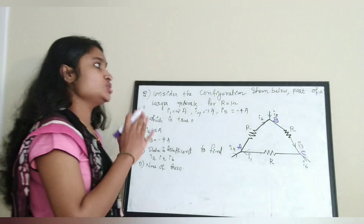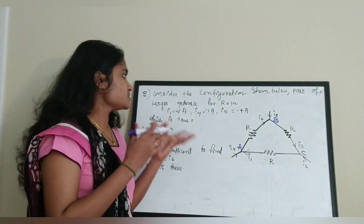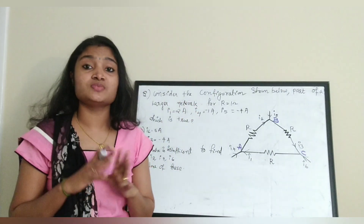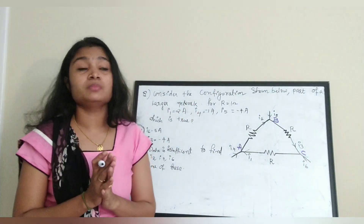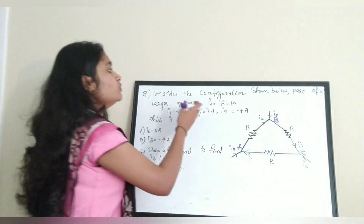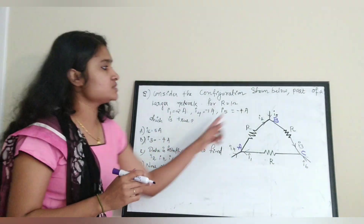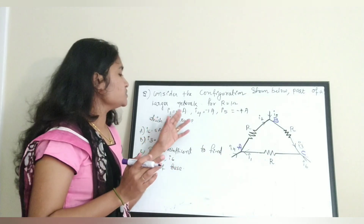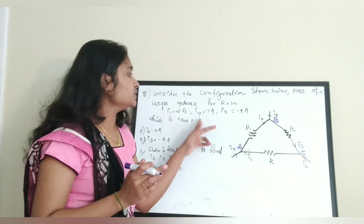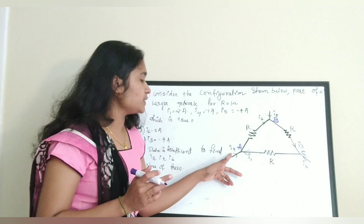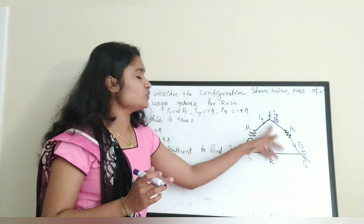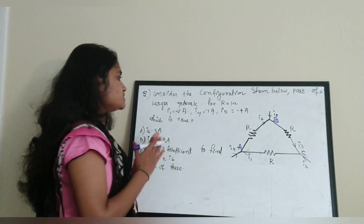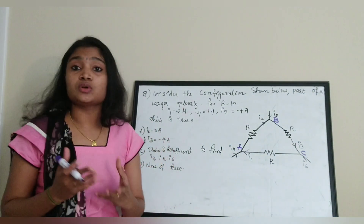Consider the configuration shown below, part of a larger network. We can identify this as a question from network analysis. The values given are: 4R = 1 Ohm, so there is 3R and all R values are equal to 1 Ohm. I1 = 2 Ampere, I4 = −1 Ampere, I5 = −4 Ampere. Which of the following options is true?